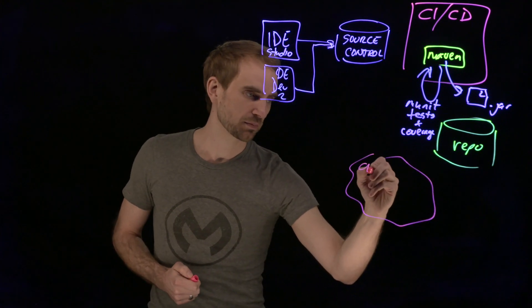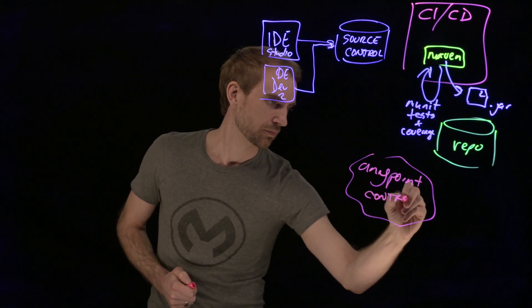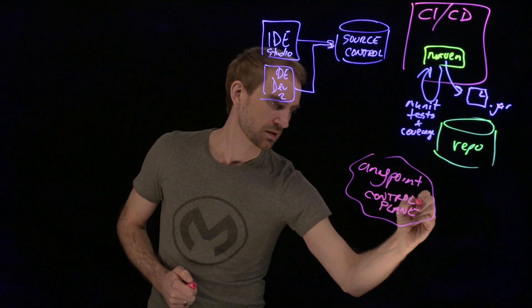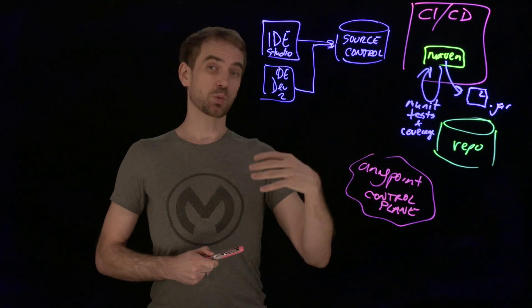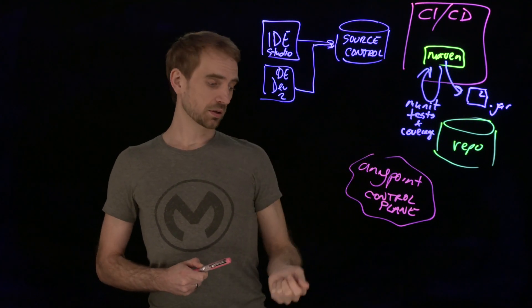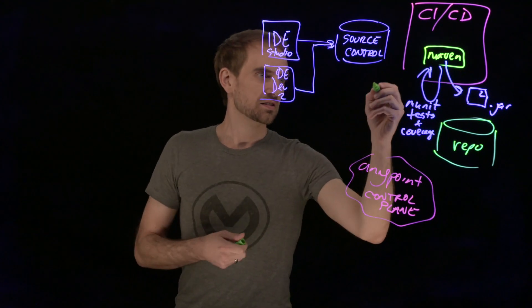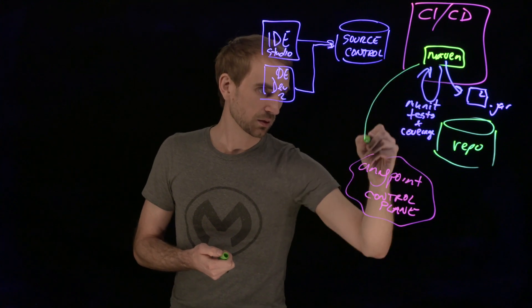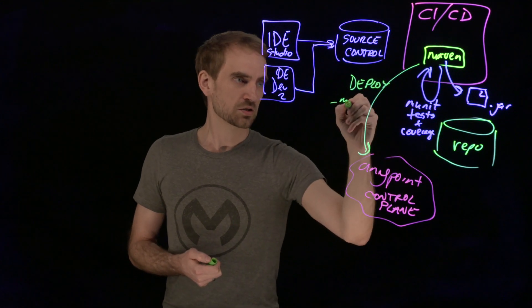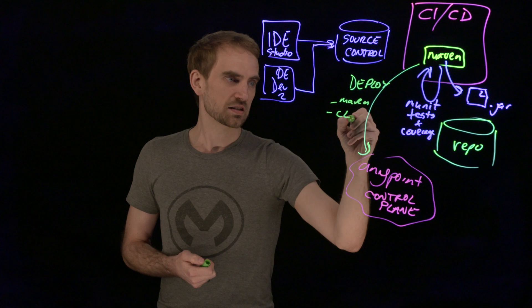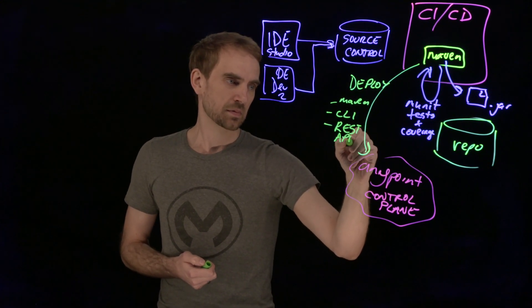If we think about the AnyPoint platform, this is the management interface — there are REST APIs that are exposed by it. So that's one option for doing a deploy. Maven can call those REST APIs. There's also another option, which is the CLI. So you've got options for doing the deploy: you could use Maven, you could use the CLI, or you could use the REST APIs directly.